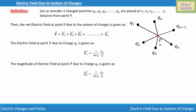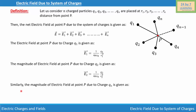In the same way, we can find the magnitude of the electric field due to all the other charge particles from Q1, Q2, Q3 all the way to Qn. The magnitude of the electric field at point P due to charge Qn is given as En = 1/(4πε₀) × Qn/Rn².